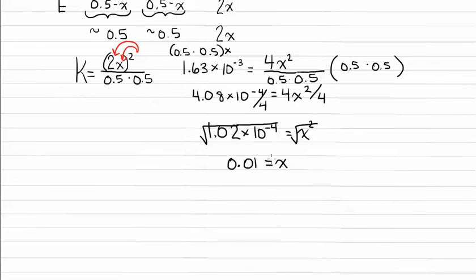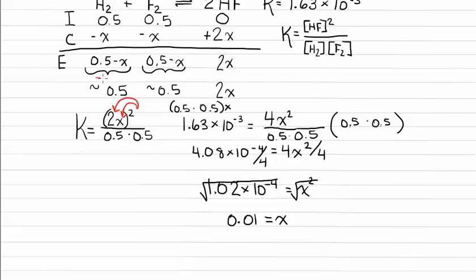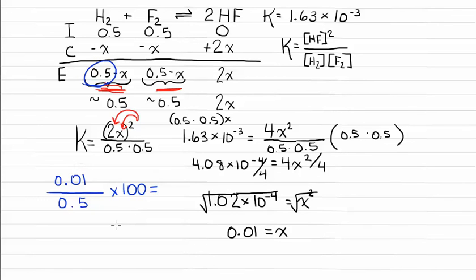Before we go further, we need to check that our assumption is valid — that the change in x is negligible. To check: take x (0.01), divide by the initial concentration (0.5), and multiply by 100. If this is less than 5%, the assumption is valid. In this case, 0.01 divided by 0.5 times 100 gives an error of 2%. Since 2% is less than 5%, our assumption is valid and we can continue. If the assumption were not valid — if the change in x exceeded 5% of the initial value — you would need to use the quadratic formula or a higher-order root-solving method.